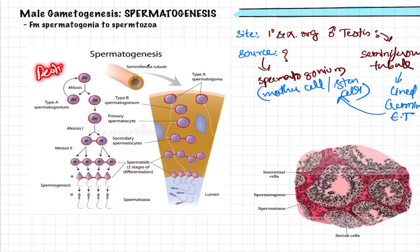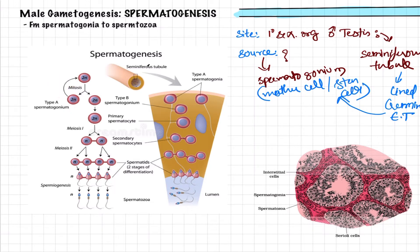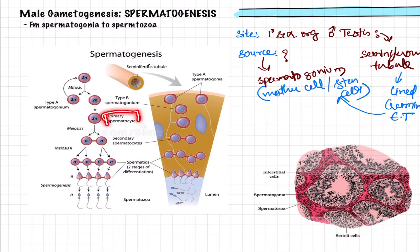The resting spermatogonium cells undergo many cycles of mitosis cell division and form Type A and Type B spermatogonium cells. What is important to note here is that Type A cells are reverted back in the cycle, whereas only Type B cells proceed forward. These Type B cells undergo another mitosis division and form the primary spermatocyte. Up to this point, only mitosis division is taking place.